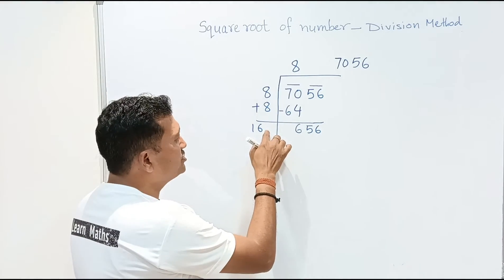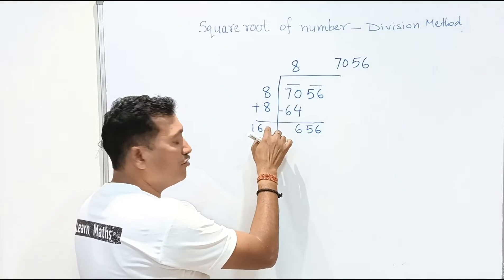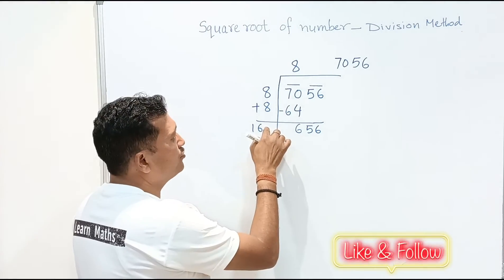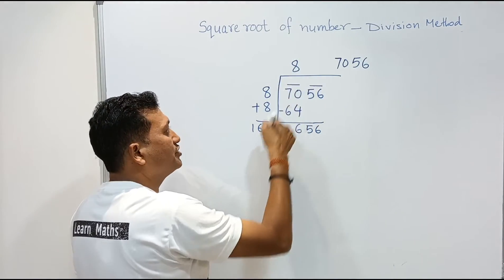So we have to take one digit beside 6. If I take 0 over here, here also I should take 0. So same number has to be taken over here.